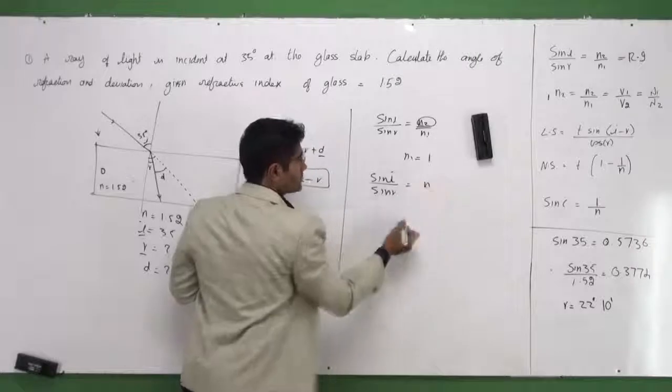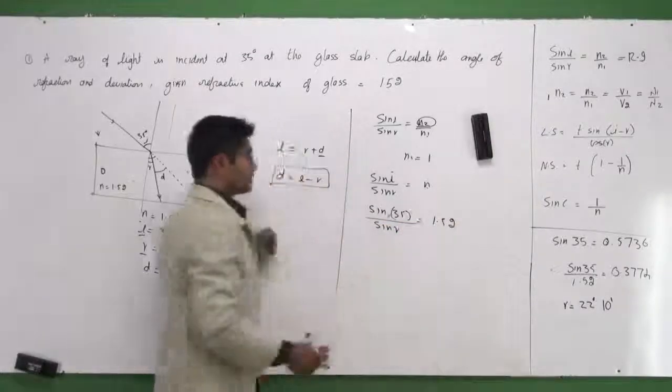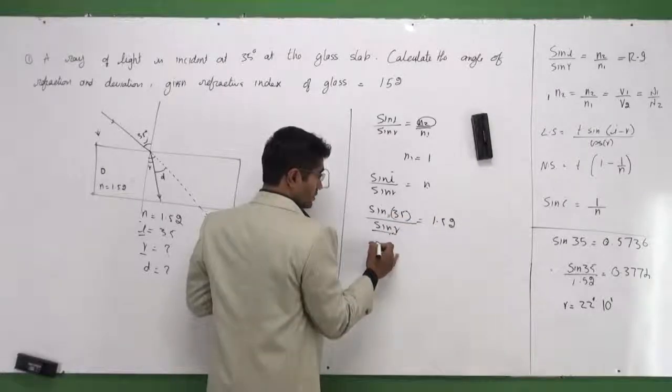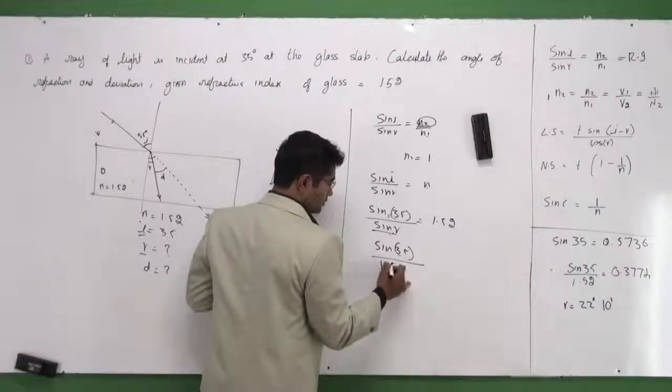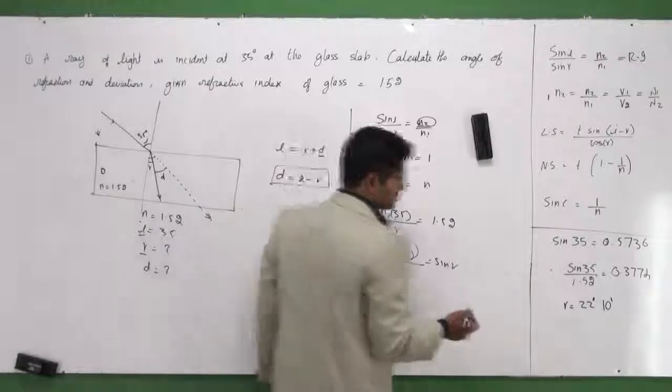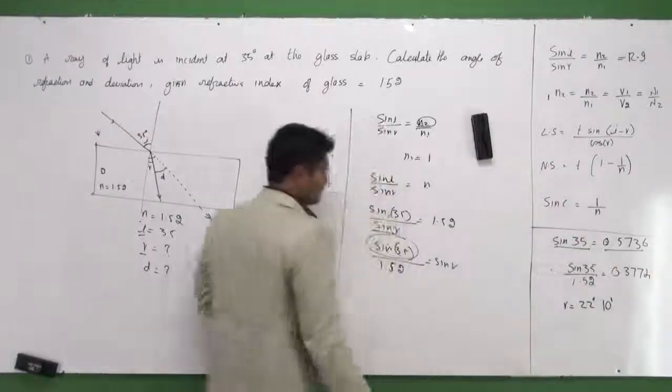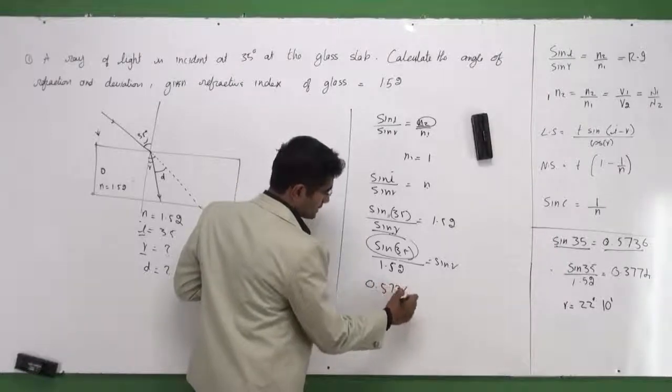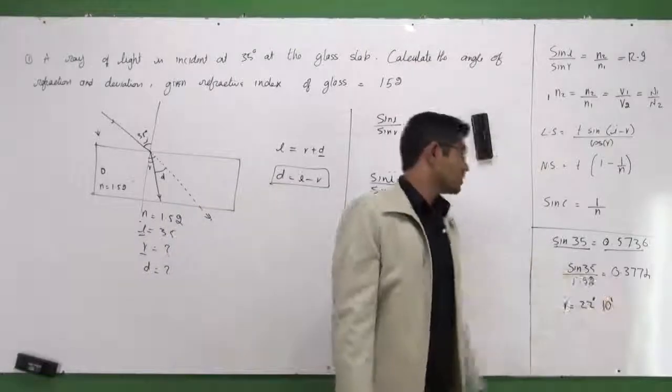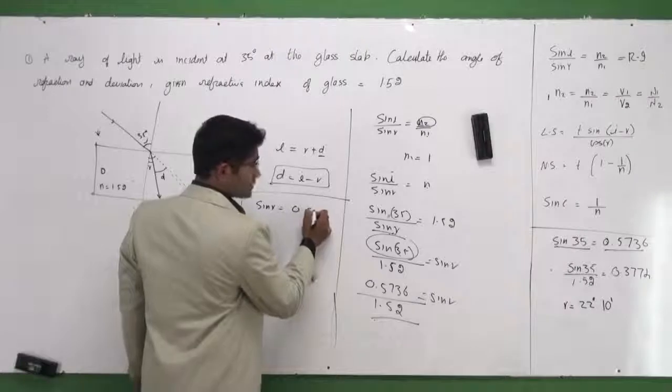What else is given to me? I can see that i is given to me, and n is given to me. So let me substitute: sin i—i is 35 degrees—and I have sin r equals n is 1.52. In this whole equation, the only thing you don't know is r, and that's what we're supposed to find out. So I can rearrange this: sin 35 divided by 1.52 would be equal to sin r. You've got to know how to use the logbook. So find out the value of sin 35, and that comes to around 0.5736. sin 35 is 0.5736, and that divided by 1.52 is what I have—that is sin r.